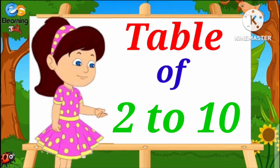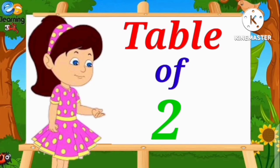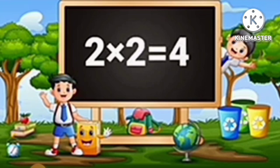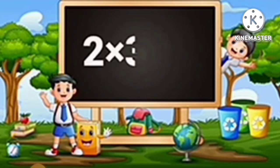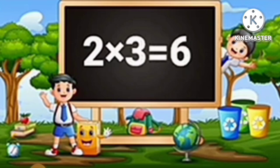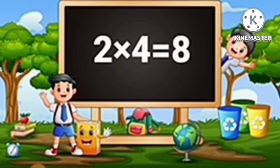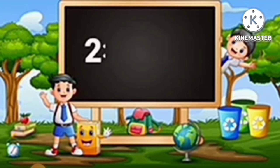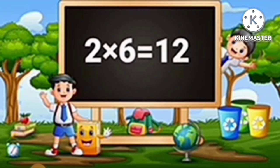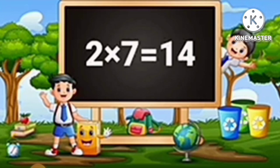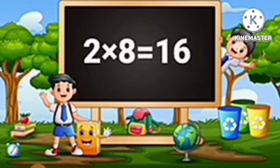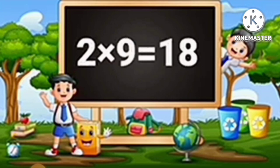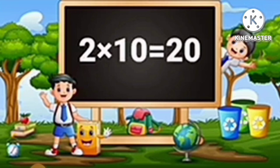Table of 2 to 10. Table of 2: 2 ones are 2, 2 twos are 4, 2 threes are 6, 2 fours are 8, 2 fives are 10, 2 sixes are 12, 2 sevens are 14, 2 eights are 16, 2 nines are 18, 2 tens are 20.